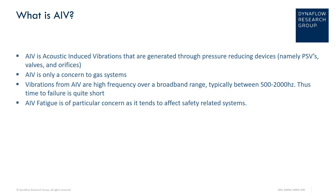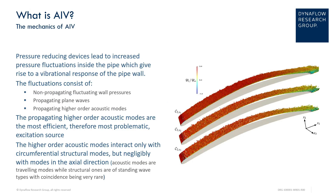Due to this high frequency, the time to failure is often quite short, being a matter of minutes, hours, or days. AIV mechanics are as follows: pressure-reducing devices lead to increased pressure fluctuations within the pipe, which give rise to a vibrational response of the pipe wall.